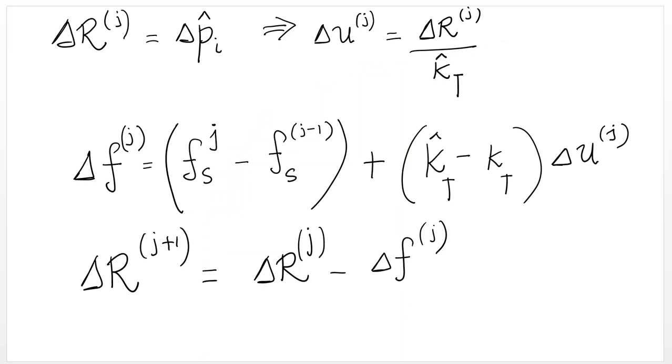I have written down here the steps just as they are shown in the table. And basically, it's this term here that gets put back and you are iterating until delta R or the unbalanced force becomes very small.